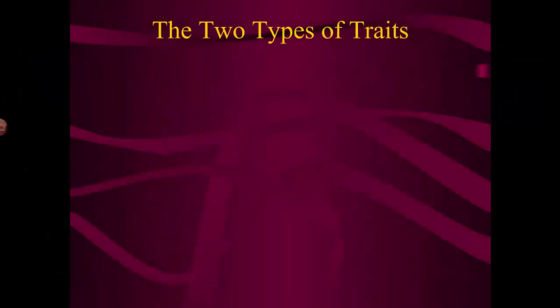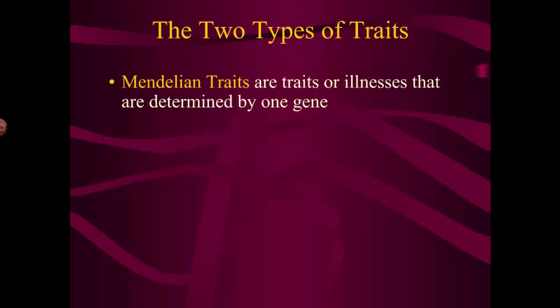In genetics, we generally divide traits up into two types. We have the classic Mendelian traits. Mendelian traits are traits or illnesses that are controlled by one gene — things like sickle cell anemia, cystic fibrosis, adrenoleukodystrophy.